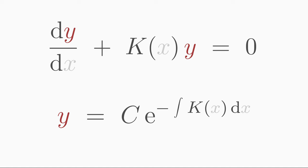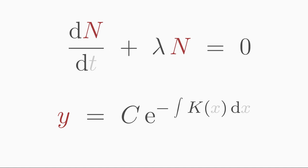For example, let's look at the differential equation for the radioactive decay law. In this case, the search function y is the number of not-yet-decayed atomic nuclei n and the variable x corresponds to the time t. And the coefficient k in this case is a decay constant lambda.